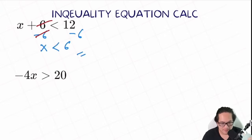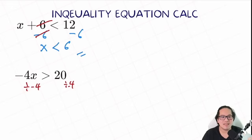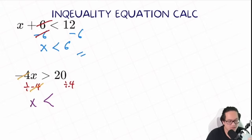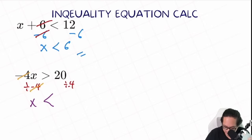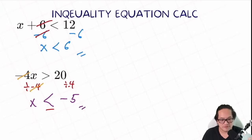We have negative 4x larger than 20. We need to isolate x by dividing negative 4 on both sides. Remember, anytime you multiply or divide with a negative number, your sign needs to change. So make sure the sign got changed. Negative 4 gets divided, so that cancels out. What we have left is x. On the other side, we got 20 divided by negative 4. A positive number divided by a negative number equals a negative number. So 20 divided by 4 equals 5, and the final answer is x is smaller than negative 5.